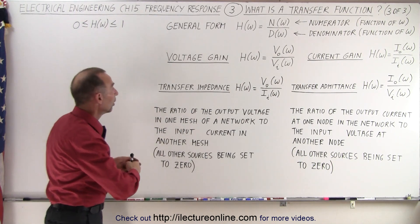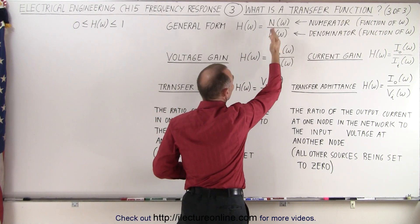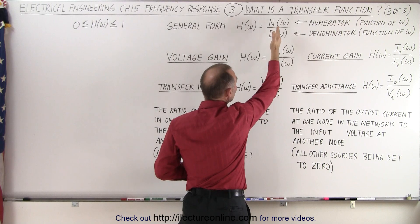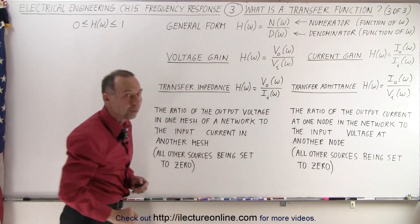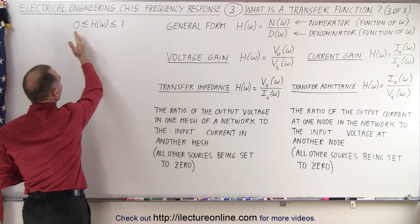Remember that the general form of the transfer function is a numerator divided by a denominator. It's a ratio where both the numerator and the denominator are functions of the frequency, and the value of the transfer function is somewhere between 0 and 1.